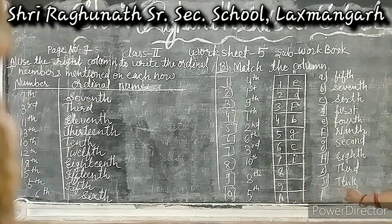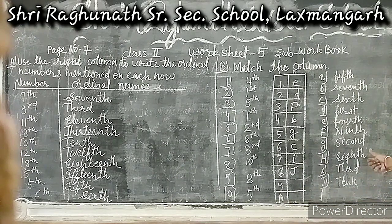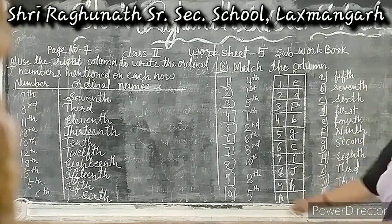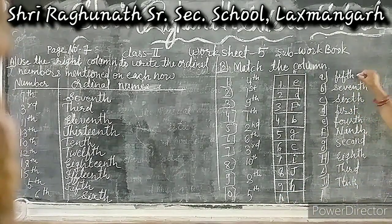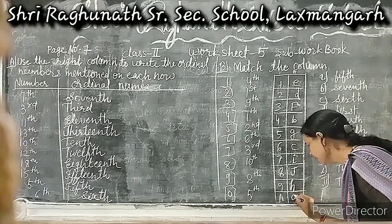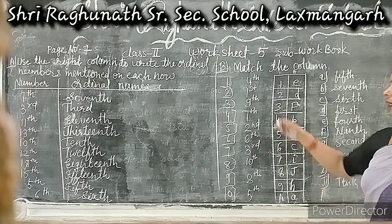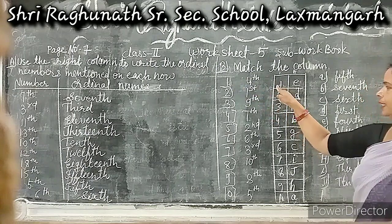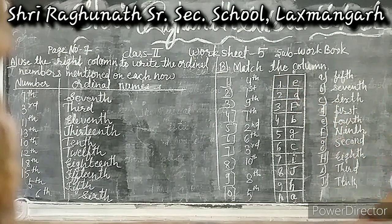Eight which is tenth — the right answer is J. Ninth which is eighth — the right answer is E. Then check on it: the right answer is H. The first right answer is E. So you match the line and your answer is clear.